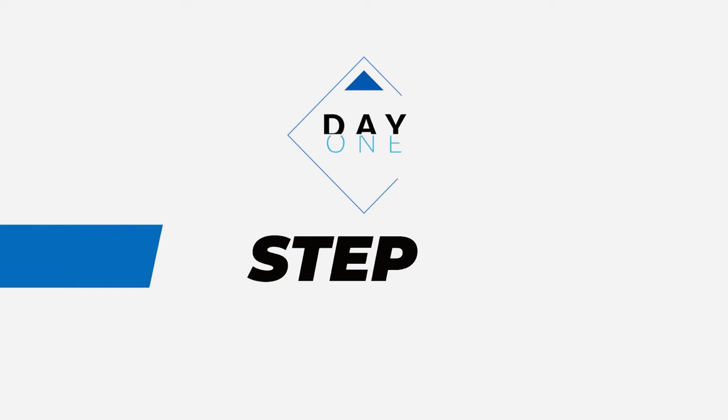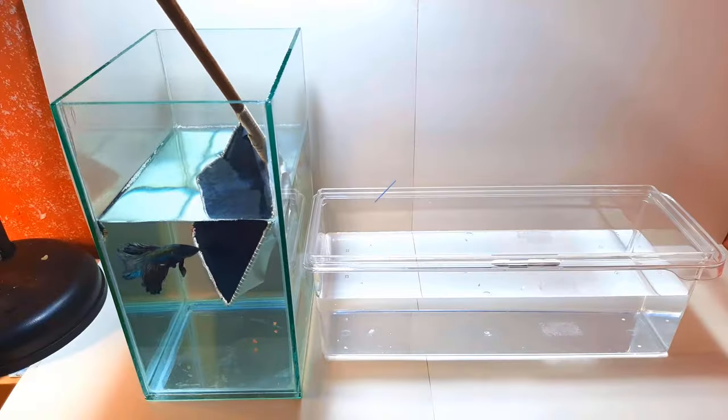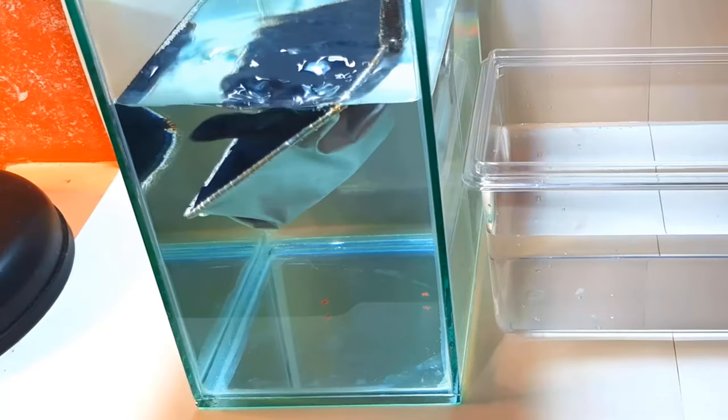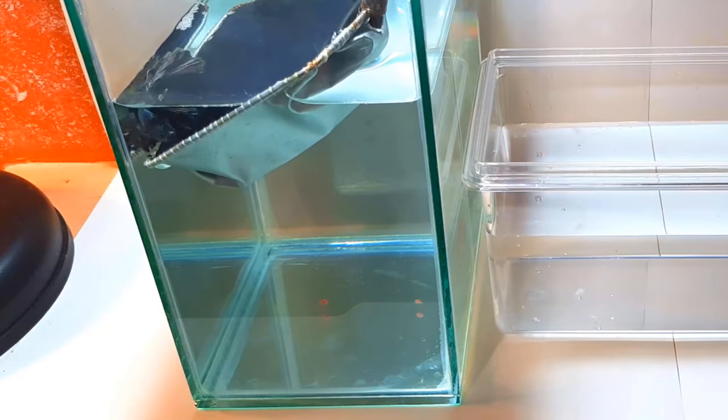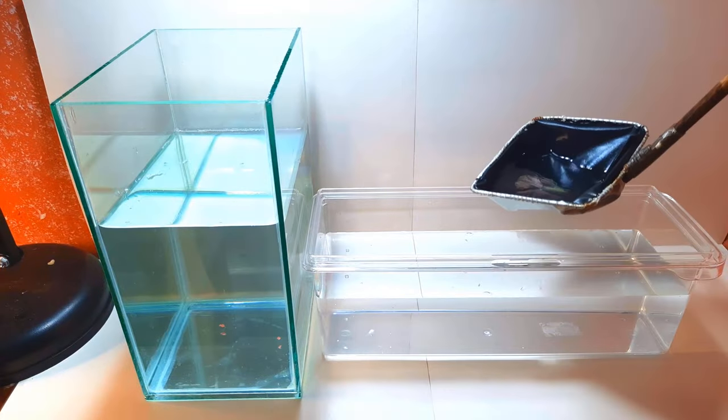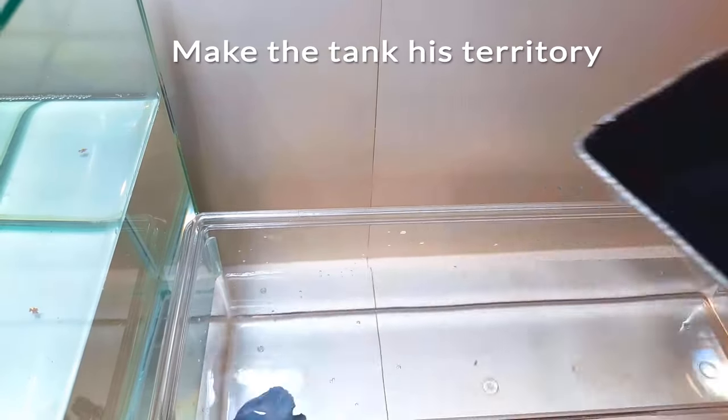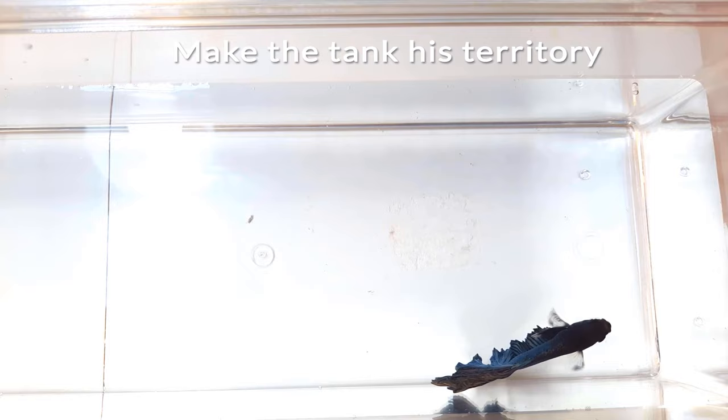Step 1. Day 1. Male in the tank. Introduce the male Betta to the breeding tank. He will explore the tank, and after 30 minutes or more, he will claim the tank as his territory.